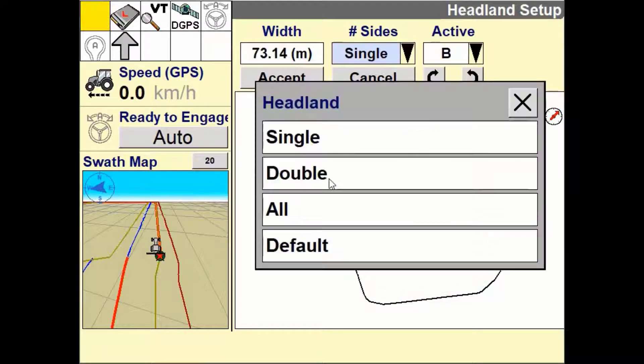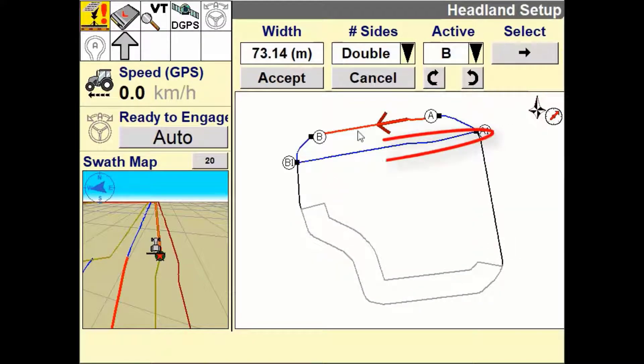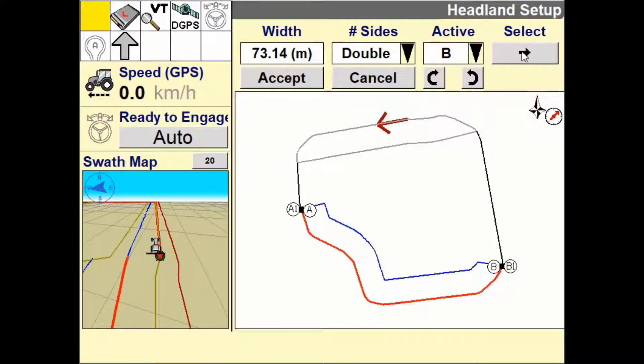If creating either a single or double headland you will need to define the inner and outer edge. The inner edge is represented as A1 and B1 whereas the outer edge or field boundary is defined between points A and B. Moving either of these points will alter the design of the headland boundary.